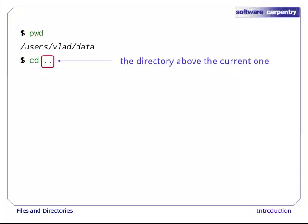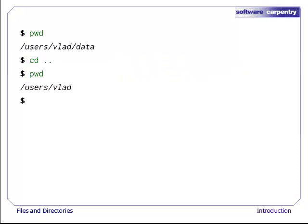Dot dot is a special directory name, meaning the directory containing this one, or more succinctly, the parent of the current directory. Sure enough, if we run pwd after running cd dot dot, we're back in Users/Vlad.